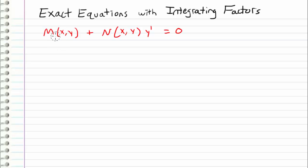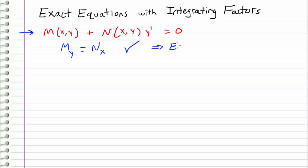In this video, we are going to build on the ideas that we learned in the previous videos with exact equations. So let's say that we have an arbitrary differential equation that is in the form of an exact equation. Typically what we would do is we would check if M_y is equal to N_x, and if that's true, then that means the equation is exact and we can proceed with the methods we learned in the previous videos.